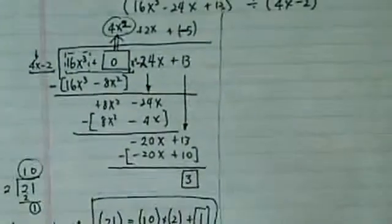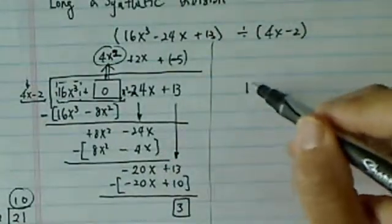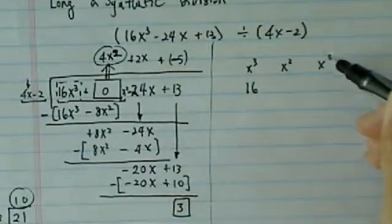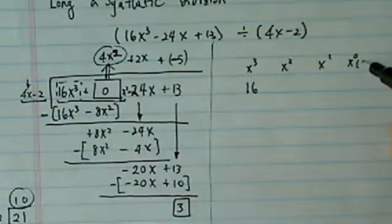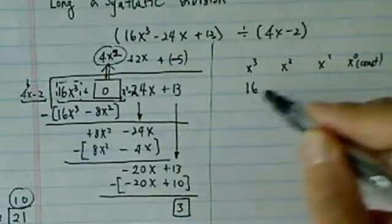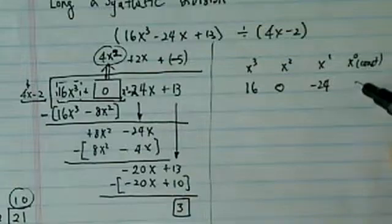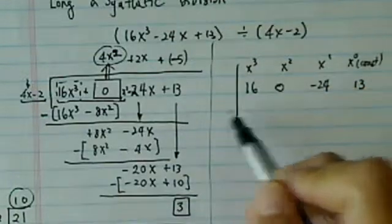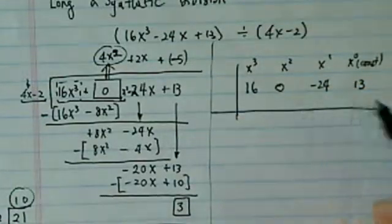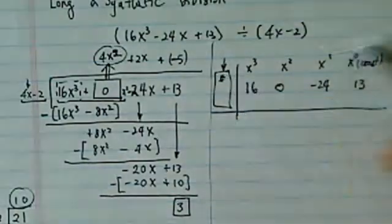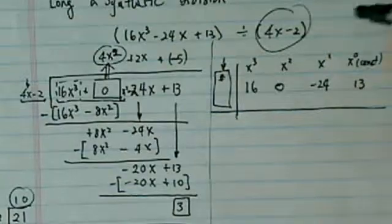Now let's take a look at synthetic division side by side. We're going to do the same thing here: x cubed, x squared, x to the 1, x to the 0—this is our constant term. So 16, minus... this is 0, minus 24, and 13. Now here's the trick for our synthetic division: we have to put a number over here.